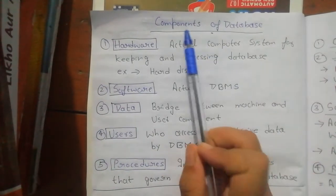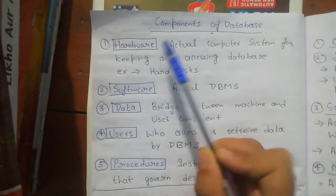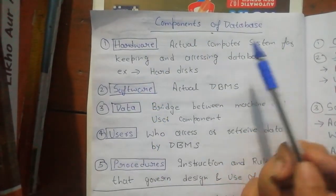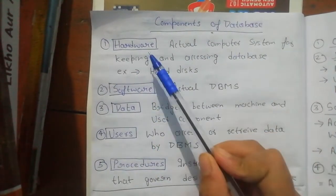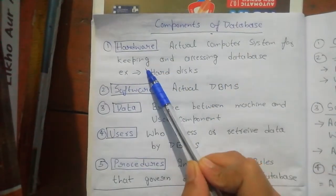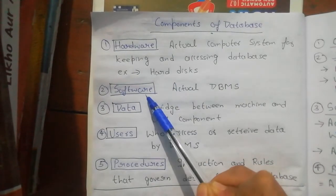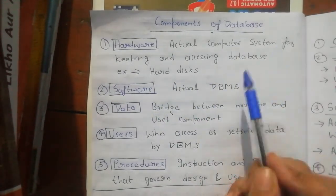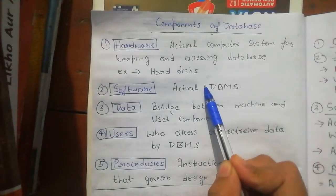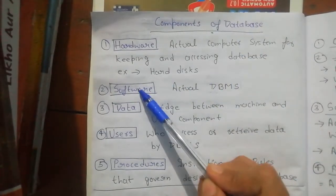In this video I will tell you about the components of a database. We have different components like hardware, software, data, users, and processors. In a database, we define hardware as the actual computer system for keeping and accessing the database, like a hard disk. Software is the actual database — so whenever we say what is DBMS in regards to this database, this is a software.